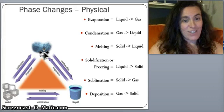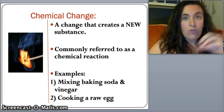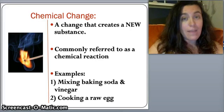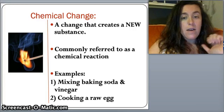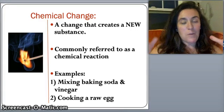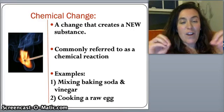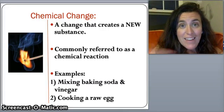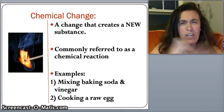Now for chemical changes. This is very different — this is where you actually change the substance and create a new one. Think of this as a chemical reaction. Examples include mixing baking soda and vinegar like in a volcano model — it fizzes because a chemical reaction is happening. Cooking a raw egg is also a chemical reaction: heat breaks down the proteins and changes them into new substances.